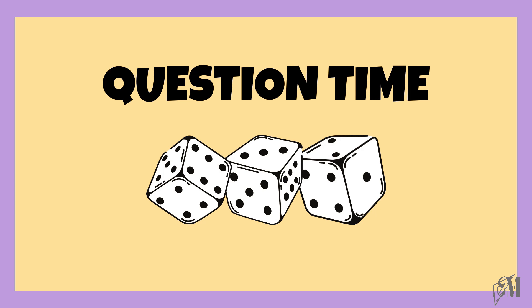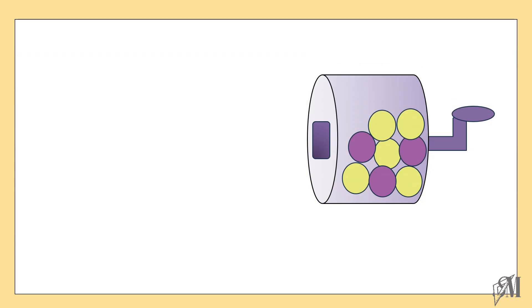Now let us go into some questions related to probability. Look at this cylinder. There are some colorful balls of the same size and shape but different colors. Let us see what the questions are. What is the probability of getting a purple ball? Now the first step is you have to see how many purple balls are there. When you count, you have 3 purple balls. And the total number of balls are equal to 8. Therefore, the probability of getting a purple ball is 3 over 8.